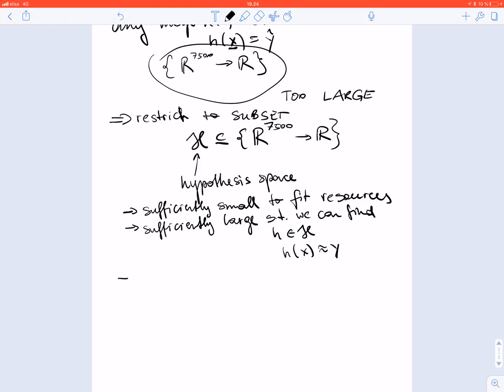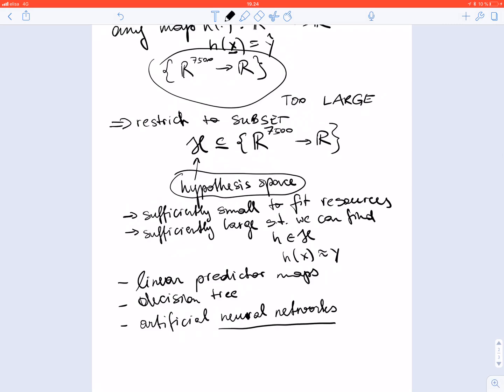We will now discuss a few examples for how to construct a hypothesis space. These include linear predictor functions or linear predictor maps, which is maybe the most basic and most widely used example for hypothesis space. Another example are decision trees, a particular choice for the hypothesis space. Another example are artificial neural networks, which underlie deep learning methods. These artificial neural networks are a particular choice for this hypothesis space, obtained by representing functions by neural networks which we will discuss in a second.